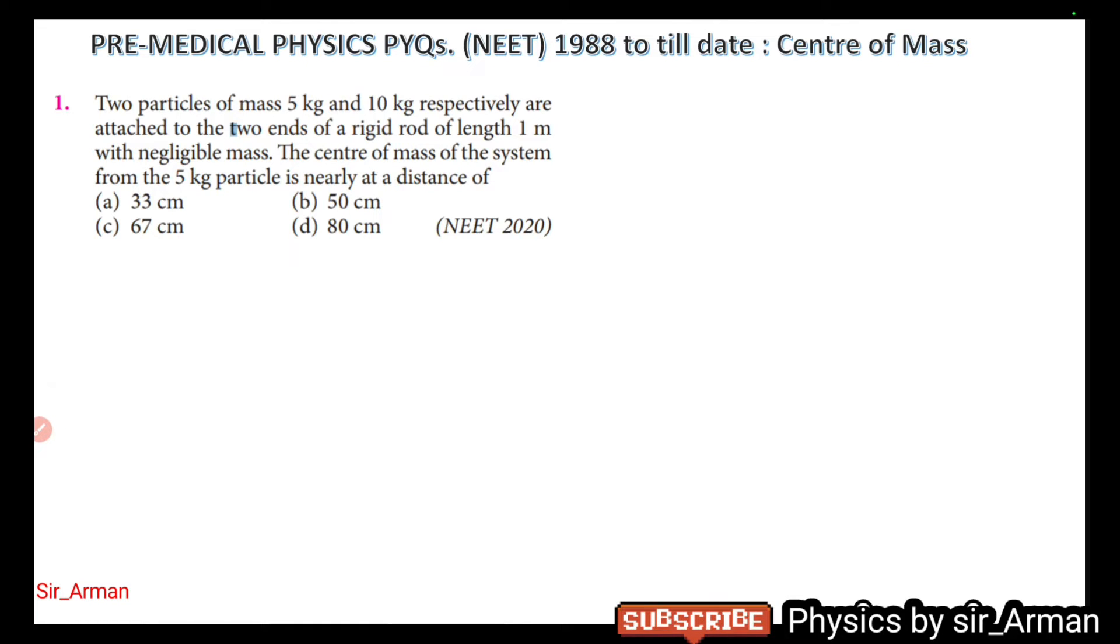In this question, two particles of mass 5 kg and 10 kg are attached to the ends of a rigid rod of length 1 meter with negligible mass, so we do not need to consider the mass of the rod. The center of mass of the system from the 5 kg particle is at a distance.